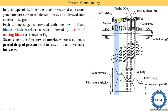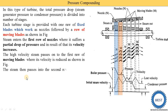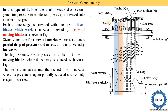Then this high velocity steam is supplied to the first row of moving blades, where its velocity is reduced as shown in the figures. In the moving blade, pressure remains constant but velocity is reduced. The velocity is reduced because when steam strikes the moving blade, the blade starts to rotate and some kinetic energy is utilized. After this, the steam passes into the second row of nozzles, completing the first stage.